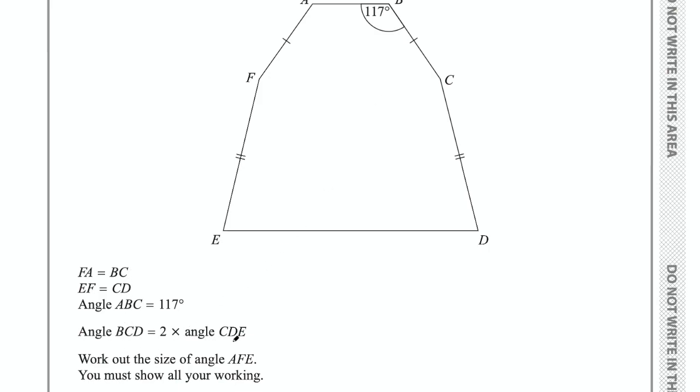Angle BCD equals 2 times angle CDE, so BCD is here and CDE is here. If it's 2 times CDE, I might call CDE x, and then BCD is going to be 2x. The question says work out the size of angle AFE, you must show all your working, and AFE is in here.